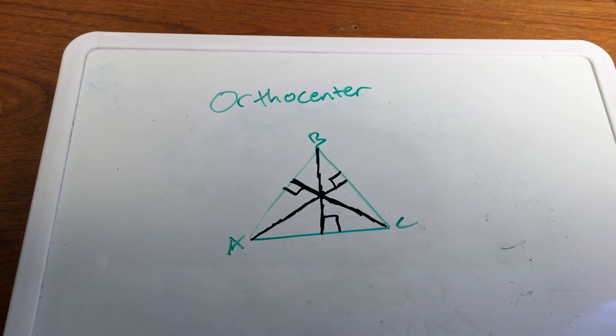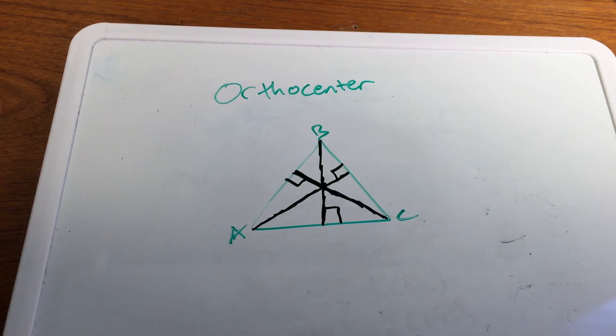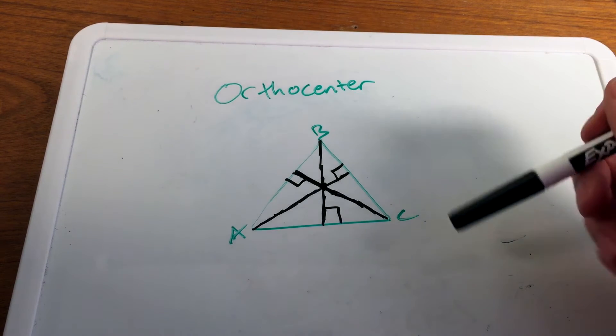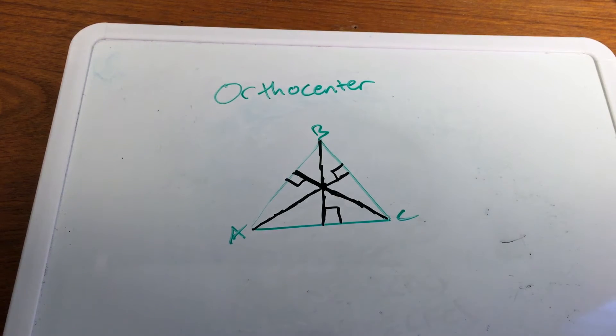There's nothing really too special about the orthocenter — it is simply that all the altitudes will meet at a specific point, called the orthocenter. With an acute triangle, it's always inside the triangle.